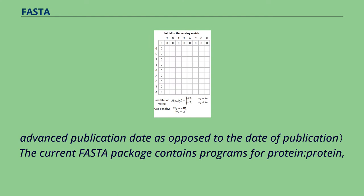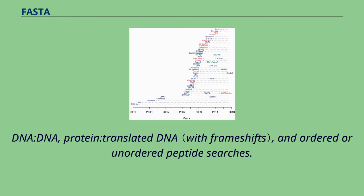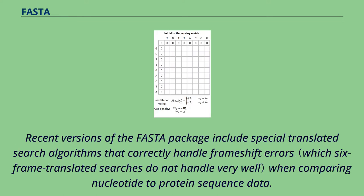The current FASTA package contains programs for protein-protein, DNA-DNA, protein-translated DNA, and ordered or unordered peptide searches. Recent versions of the FASTA package include special translated search algorithms that correctly handle frameshift errors when comparing nucleotide to protein sequence data.